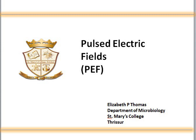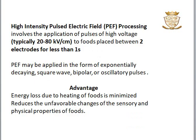Today I am going to discuss Pulse Electric Field, which is used in food preservation. Pulse Electric Field is a non-thermal technology used in food preservation. High intensity pulse electric field processing involves the application of pulses of high voltage to foods placed between two electrodes, and it is subjected for less than one second.